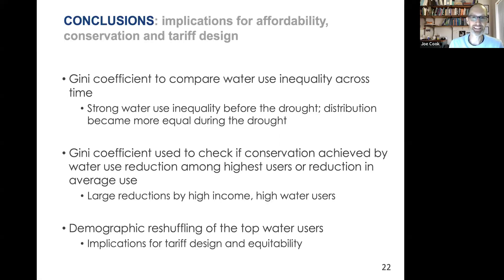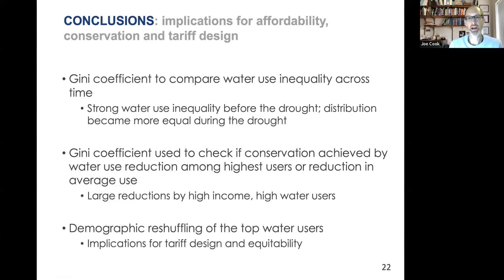We also wanted to look at whether the Gini coefficient was tracking changes in water use among higher users. We saw large reductions by high-income, high water users, but also demographic reshuffling of the top water users — the average income of the top 10% dropped. It's also worth asking how it's possible for the bottom quintile, qualifying for the indigent program, to be spending 20% of their income. The indigent program only provides 10.5 kilolitres per month. If you use more than that, you get kicked into the tariff structure at the third tier — which jumped substantially because the utility was trying to use that price to get consumption below 10.5 kilolitres.